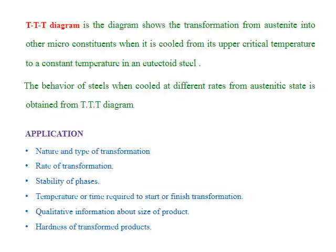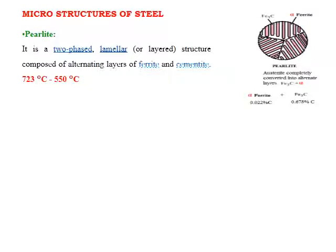Let us look at the diagram of a eutectoid steel. The eutectoid steel is nothing but the steel where the carbon concentration is 0.8%. Let us start with the understanding of different microstructures we are going to observe in steel. The first is pearlite. From our previous discussion, pearlite is a two-phased lamellar or layered structure composed of alternating layers of alpha ferrite and cementite.